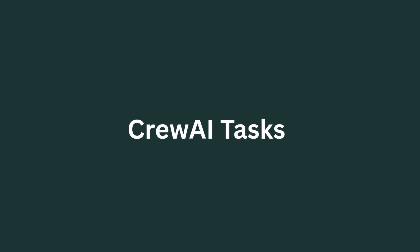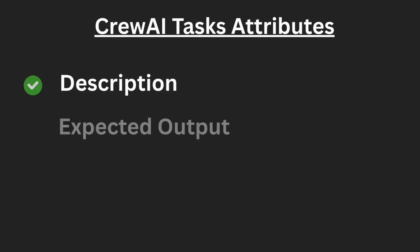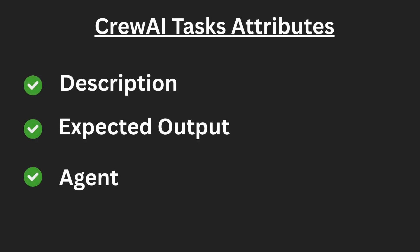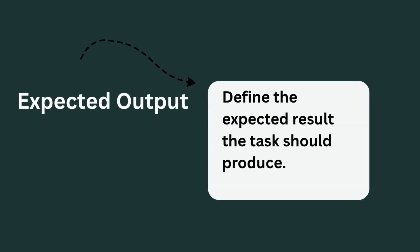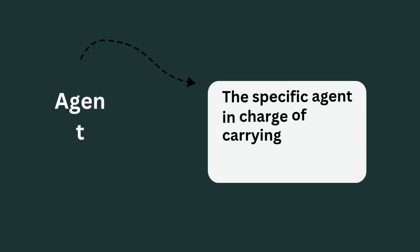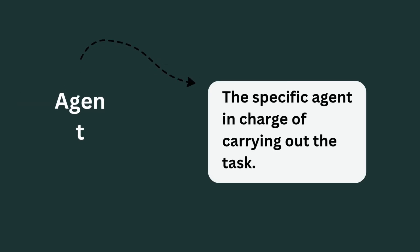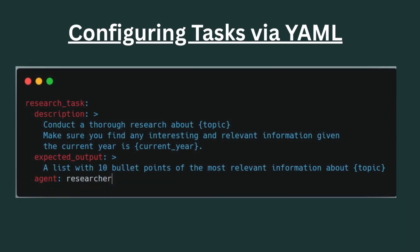Now that we've discussed what the CrewAI agent entails, let's look at CrewAI tasks. In CrewAI the task defines the unit of work the agents get to execute. Under tasks we have different attributes: the description provides a thorough explanation of what the task involves, the expected output specifies the desired results or format the task should produce, and under the agent we specify the agent in charge of carrying out the task.